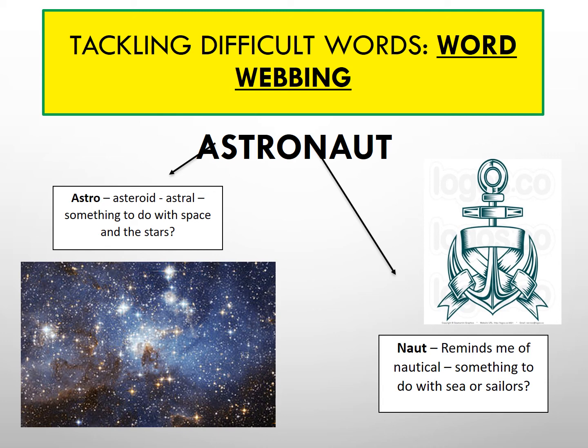As a department, we find word webbing particularly useful in order to help students understand unfamiliar words. Year 7 students are taught this explicitly in their spoken language unit. For example, the word 'astronaut' — can you break the word into different parts? Here we've broken it into 'astro' and 'naut'. 'Astro' might remind you of asteroid or astral, whilst 'naut' is reminiscent of the sea or sailors. By putting these ideas together, we can make an educated guess as to what the word might mean.